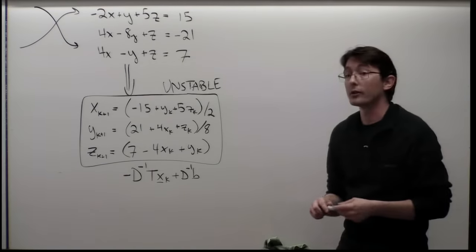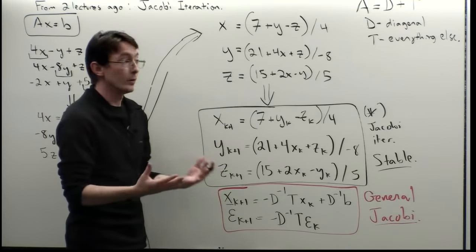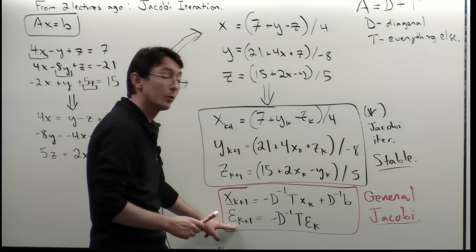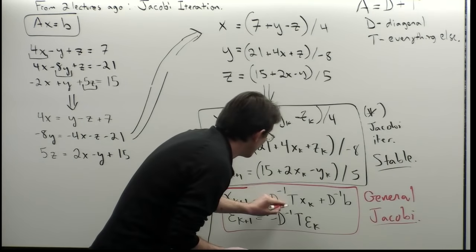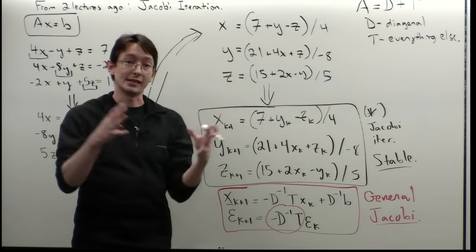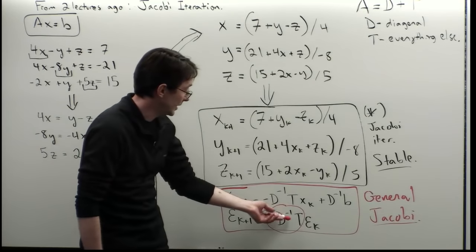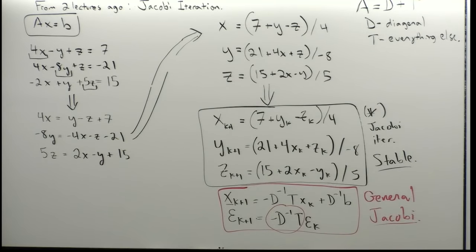If we've learned something from the lecture on eigenvalues and eigenvectors, we can look at the stability of the error equation. We want epsilon to go to zero, which means we want all eigenvalues of the matrix minus D^{-1}T to be inside the unit circle in the complex plane. That will guarantee stability. So let's go to the computer and code up these two examples and look at the eigenvalues of minus D^{-1}T.